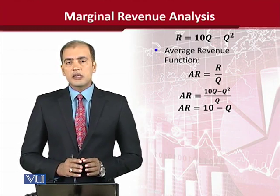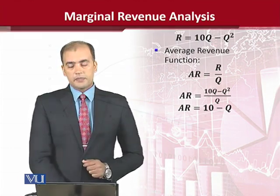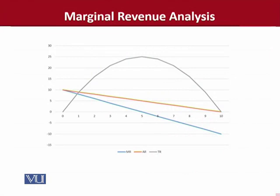अब ये दो values हमारे पास हैं — MR और AR — इसके इलावा original revenue function भी है। इन्हें हम plot करके देख सकते हैं। इस graph में आप देख सकते हैं कि as per the theory, MR की slope ज्यादा है AR से। MR blue color में है, AR brownish-orange color में है, और TR gray color में है। Total revenue वैसे ही decline होता नजर आ रहा है जैसे हम standard theory में study करते हैं।